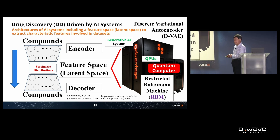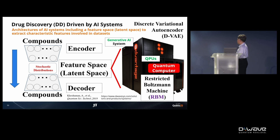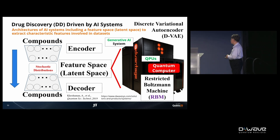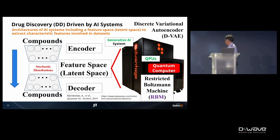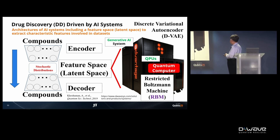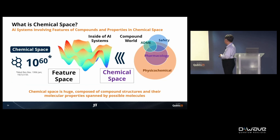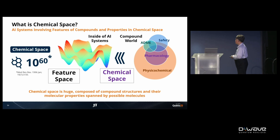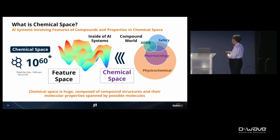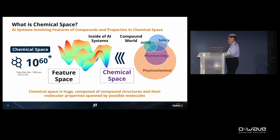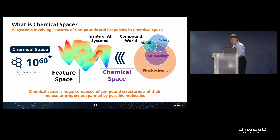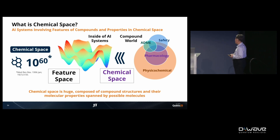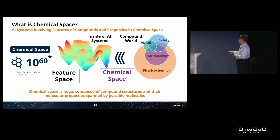The restricted Boltzmann machine (RBM) was originally developed by Professor Hinton — you may recall the Nobel Prize. Dr. Amin's team developed a new approach to involve the quantum annealing computer in the feature space. Going back to the design work: we need to optimize many parameters of compounds, analyze the very huge compound space, and transfer it to the feature space inside the AI system.